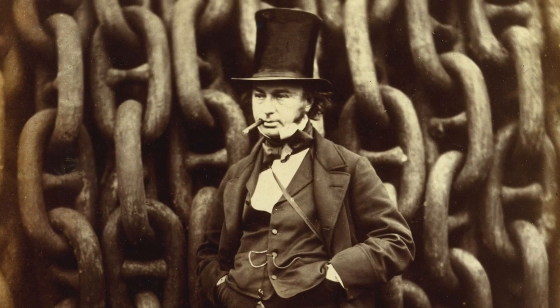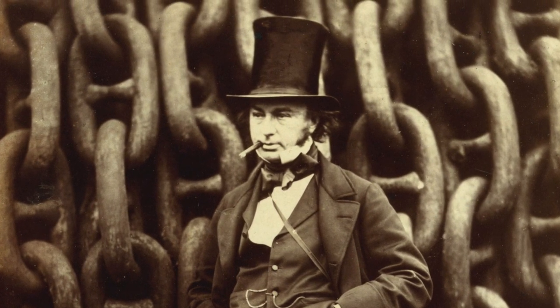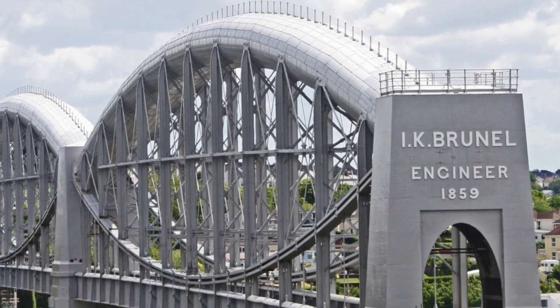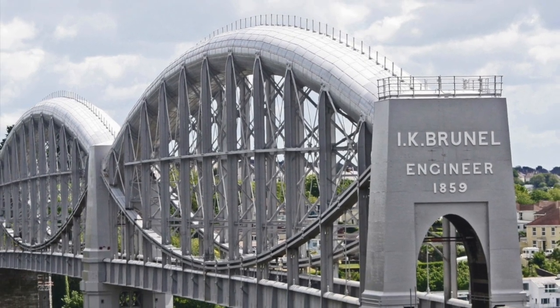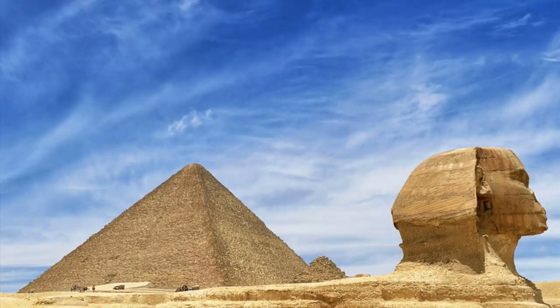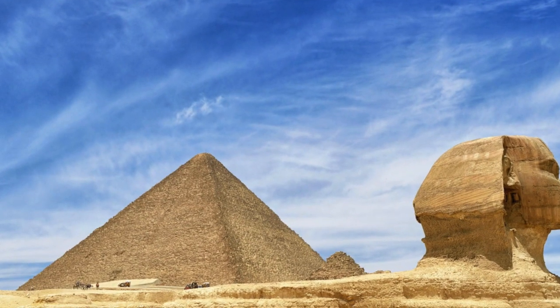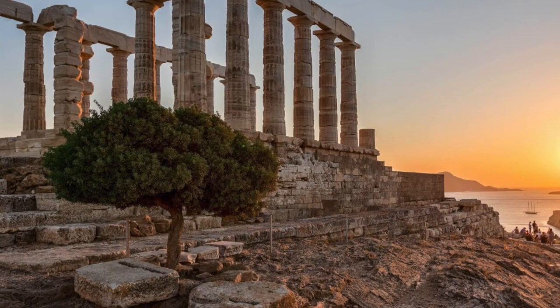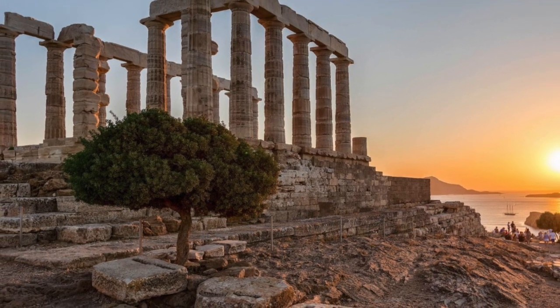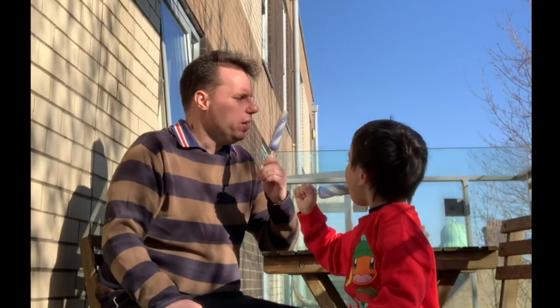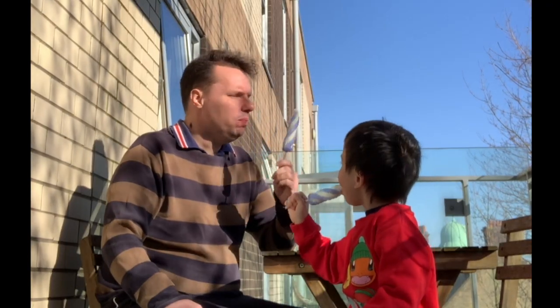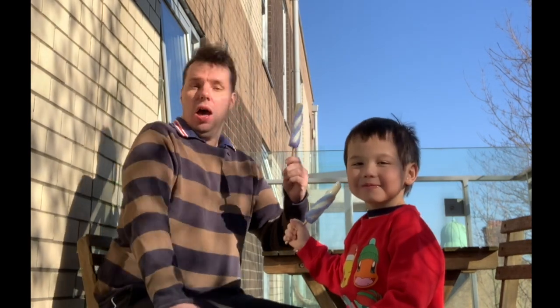Isambard Kingdom Brunel, a giant of the Industrial Revolution, bent steel to his will to create wonders the world had never seen. The ancient Egyptians utilized stone to create marvels which stand till today, whereas the Greeks astounded the world with marble. All, however, failed to use the ultimate material: lollipop sticks.